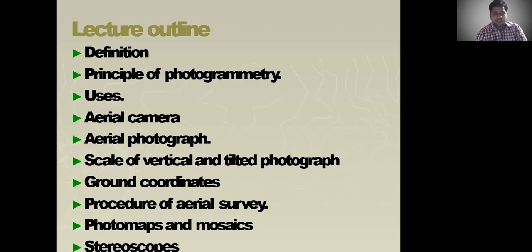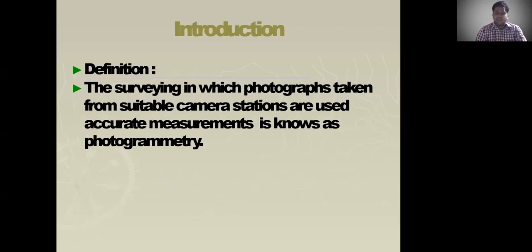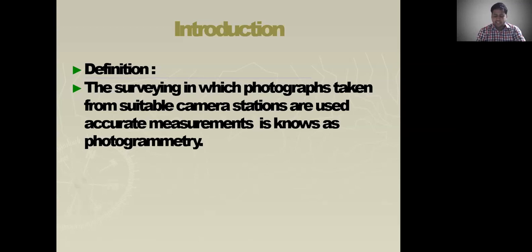We will see now the definition. The definition is: the surveying in which photographs taken from suitable camera stations are used to make accurate measurements is known as photogrammetry. Whenever you are doing a survey, the photographs will be taken from the suitable camera stations to make accurate measurements.